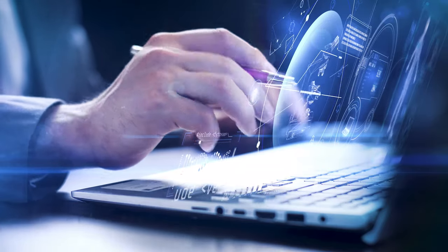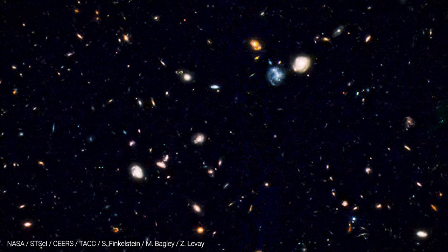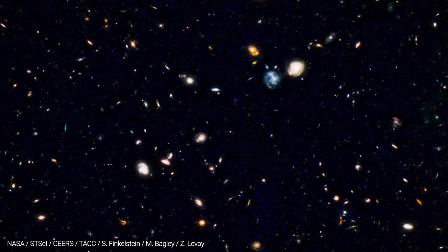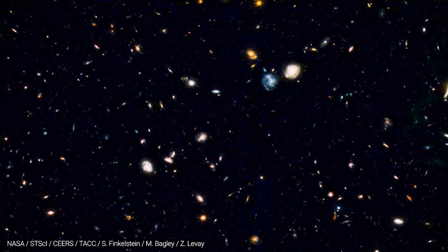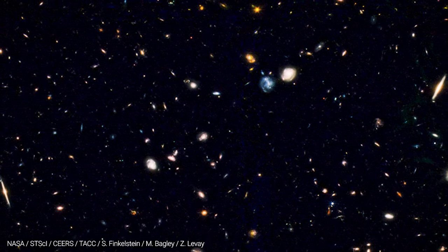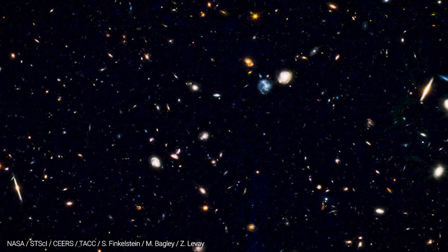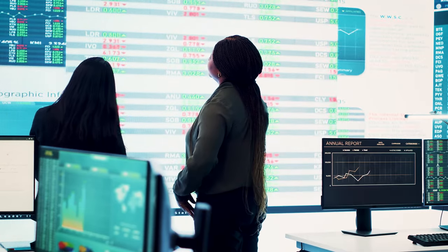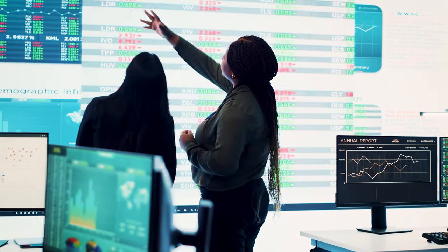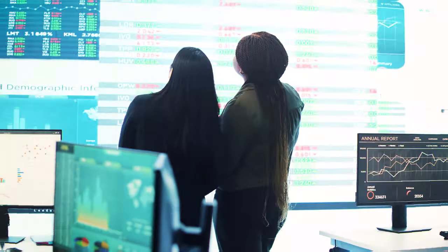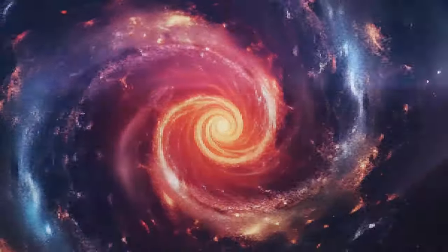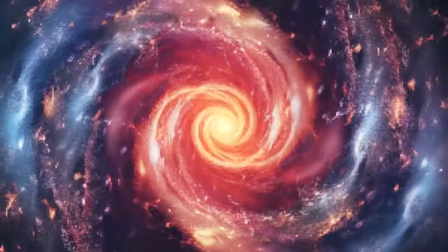One of these galaxies, CEERS 93316, had this fuzzy photometric redshift of 16.4, which was insane. That's so young, that's a very distant galaxy. And then we followed up months later with more detailed measurements, more detailed spectra. And that particular galaxy with a redshift of 16.4 was revised down to a redshift of 4.9.